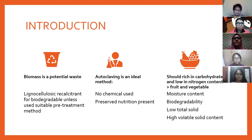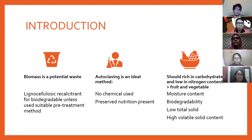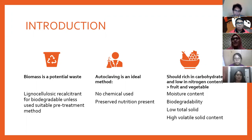Biomass is a plantation waste. However, the lignocellulosic components are recalcitrant for biodegradation unless a suitable pretreatment method is used. Autoclaving is an ideal method because there are no chemicals used and it preserves the nutrients. The substrate should be rich in carbohydrates and low in nitrogen content, which are fruits and vegetables. They are used because they have high moisture content, biodegradability, low total solids, and high volatile solid content.